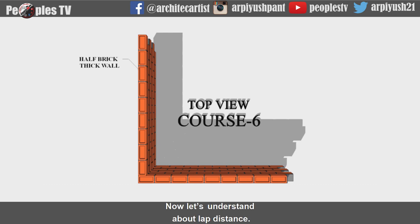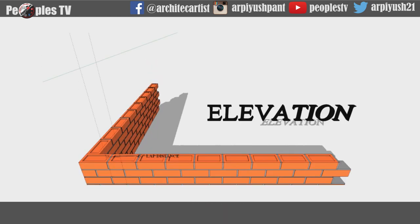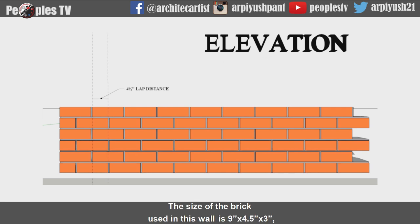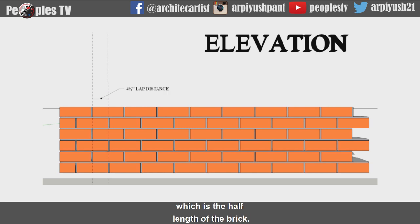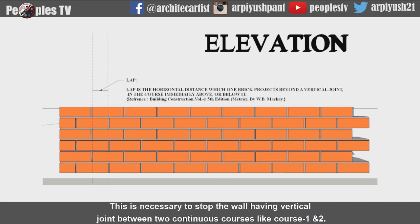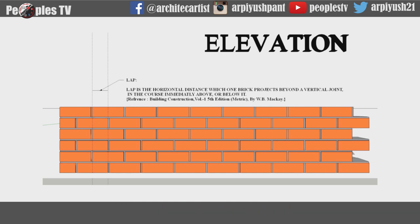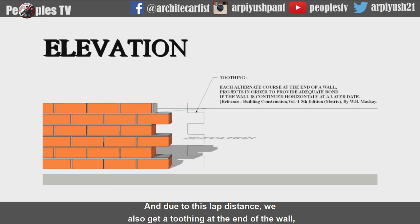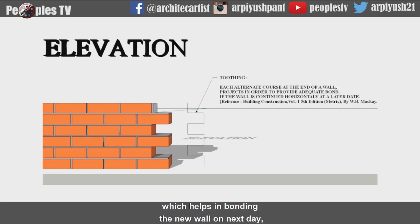Now let's understand lap distance. Going to the elevation of the wall — the size of the brick used is 9 inch by 4.5 inch by 3 inch. So our lap distance will be 4.5 inches, which is half the length of the brick. This is necessary to stop vertical joints forming between two continuous courses like course 1 and 2. Due to this lap distance, we also get a toothing at the end of the wall, which helps in bonding a new wall the next day, as we cannot build all walls on the same date.